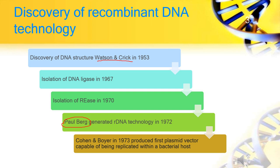Cohen and Boyer in 1973 produced the first plasmid vector capable of being replicated within a bacterial host.